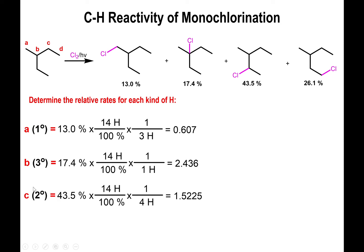For type C: this is a secondary carbon connected to two other carbons. We make 43.5% yield of that product. Converting to amount of hydrogen — 100% equals 14 hydrogens total. Type C has four hydrogens in total, because the two equivalent CH2 carbons each contribute two hydrogens. Dividing by four hydrogens per molecule gives a value of 1.5225.